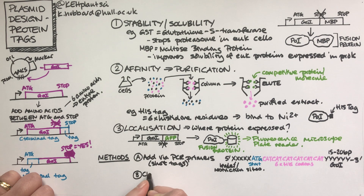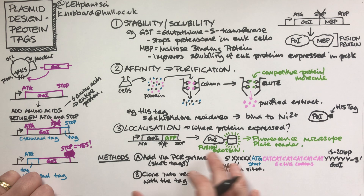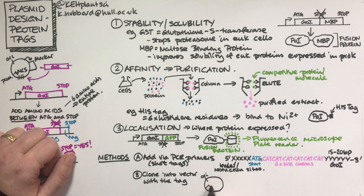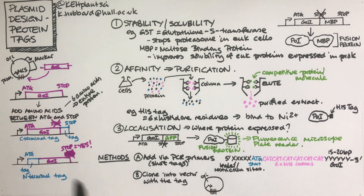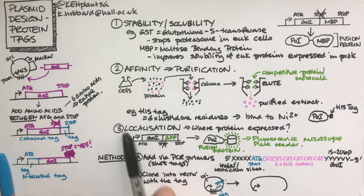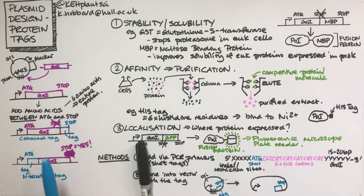The other method is to clone into a vector that already has the tag, and this is actually how people usually do it — especially for big tags like maltose binding protein or GFP which you can't add via a PCR primer. In this case the vector already has the promoter, a multiple cloning site, and then the tag sequence with the stop codon at the end. You do your cloning and get your gene of interest in next to the tag.